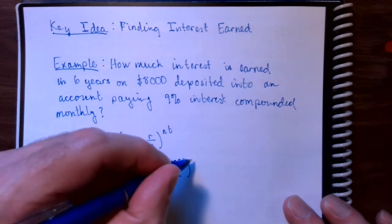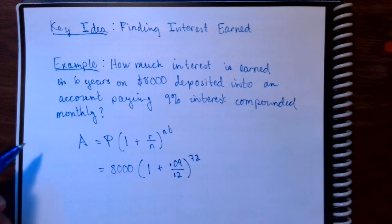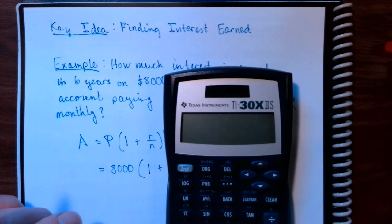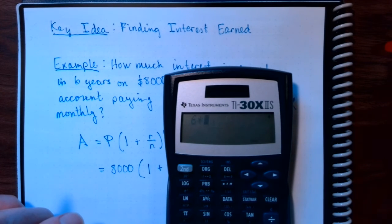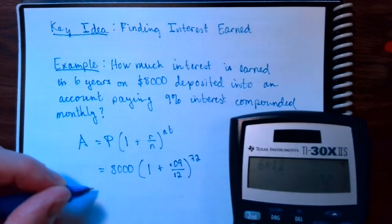6 years is 72 months. And we of course get that by doing 6 times 12. 6 years times 12 months per year gives us 72 months.